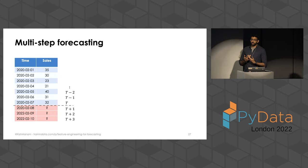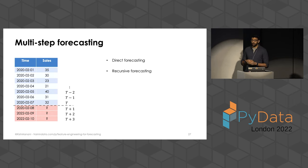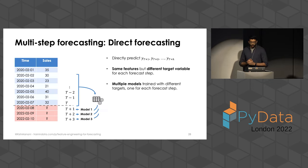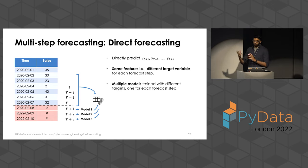In practice, you'll want to do multi-step forecasting — you care about forecasting more than just one step into the future. There are two main techniques: one is called direct forecasting and the other is called recursive forecasting. In direct forecasting, you're going to directly predict the value of the target at time T plus 1, T plus 2, and so on, with the information you have at time T. So effectively you're using the same features but creating different target variables for each forecast step — you end up training multiple models with different targets.